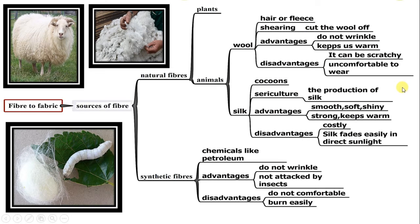Sericulture — the rearing of silkworms to make silk is known as sericulture. It is said that the Chinese were the first people to make silk. Advantages of silk: silk is smooth to touch, soft, and shiny. It is also strong and keeps us warm.